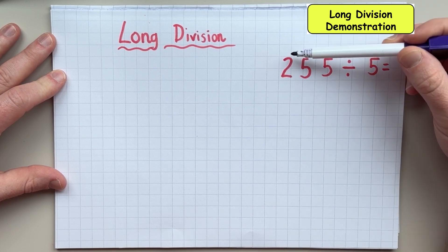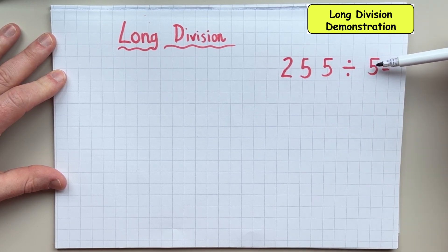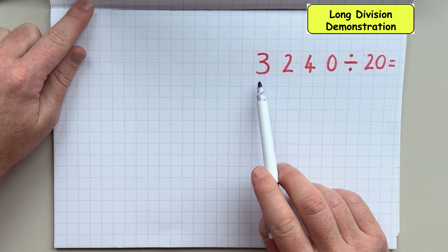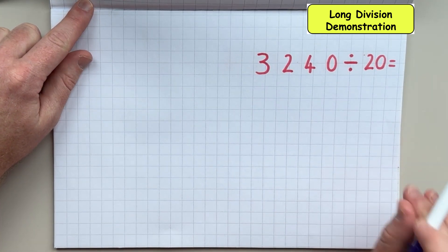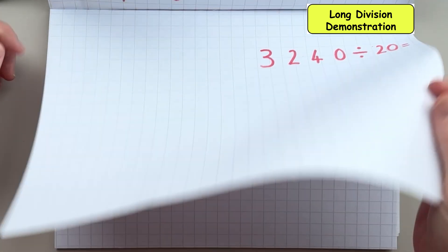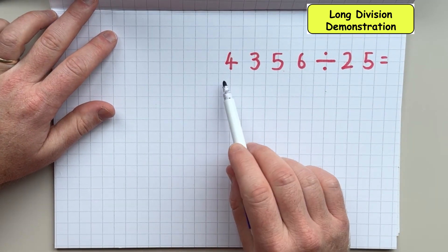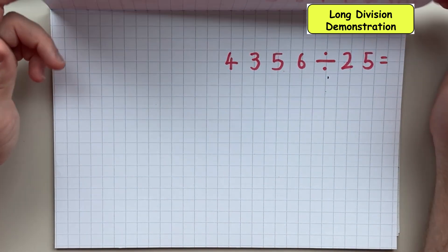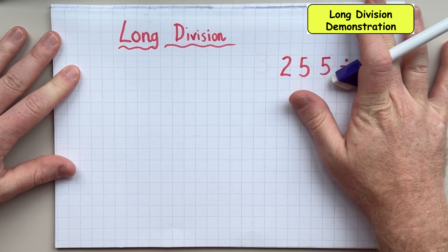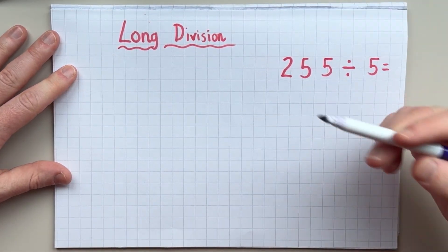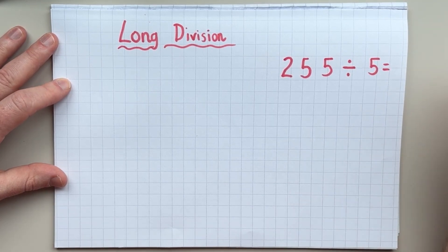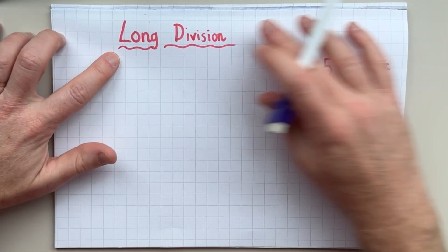The first question is going to be a three-digit number divided by a one-digit number. Then I'm going to do a four-digit number divided by a two-digit number. And then finally, I'm going to do a four-digit number divided by a two-digit number. All the way through these examples, I'm going to be telling you exactly what's going on in my head. So hopefully you'll be able to pick up a few tips and tricks on how to do long division correctly.